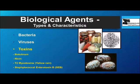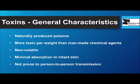Now let's talk about the toxins. These include botulinum toxin, ricin, T2 mycotoxins (also known as yellow rain), and staphylococcal enterotoxin B (SEB). These are all naturally produced poisons. As bad as we think nerve agents like sarin and VX are, these are more toxic than any of the man-made chemical agents. They're non-volatile. With only one exception, there is essentially no absorption through intact skin, and they tend not to spread person to person.